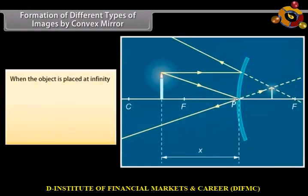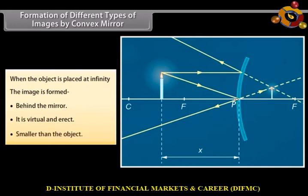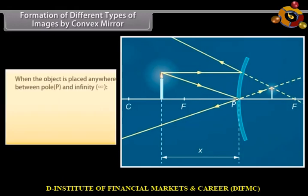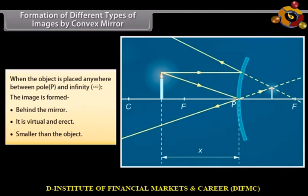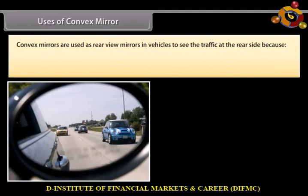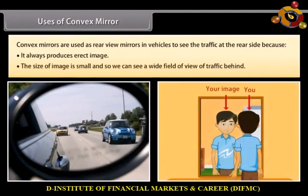When the object is at infinity, the image is formed behind the mirror — it is virtual, erect, and smaller than the object. When the object is placed anywhere between pole P and infinity, the image is formed behind the mirror — it is virtual, erect, and smaller than the object. Uses of convex mirror: convex mirrors are used as rear-view mirrors in vehicles to see the traffic at the rear side, because they always produce an erect image. The size of the image is small, so we can see a wide field of view of traffic behind.